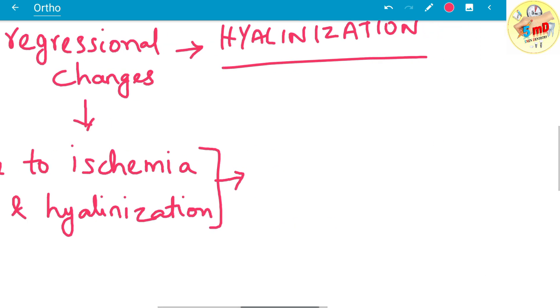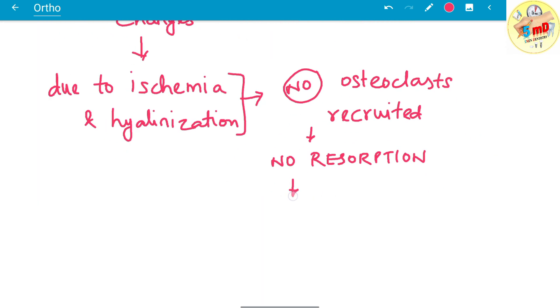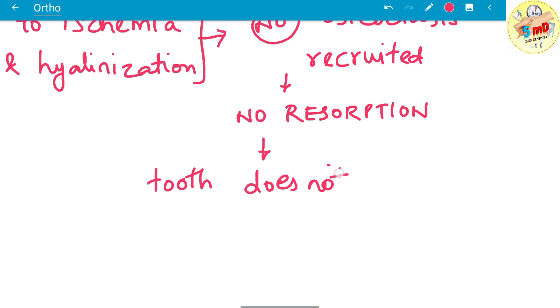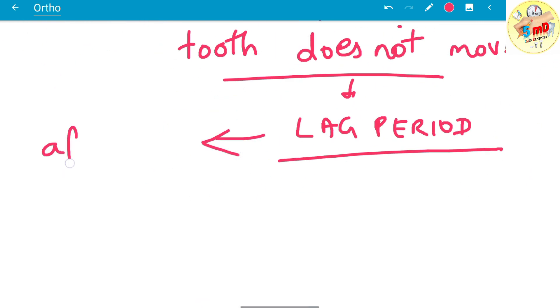Due to ischemia and hyalinization, no osteoclast recruitment happens, which normally happens in ideal ortho force. So no osteoclast recruitment means no resorption. Therefore, initially the tooth does not move in spite of the excessive orthodontic force, which leads to the lag period.